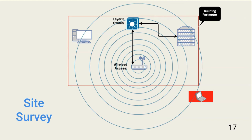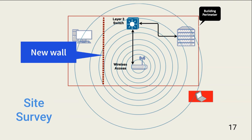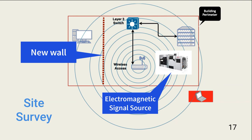Site surveys are usually walkthroughs of the current or intended wireless environment. Using special software, they not only help determine effective placement of authorized access points, they also help identify rogue access points. Rogue access points can be placed by threat actors, but they're also often used by employees who want to bypass the organization's wireless access restrictions. A survey also determines where to place access points for new areas or to improve signal strength, for example when new signal barriers are caused by remodeling or placement of devices that cause signal interference.